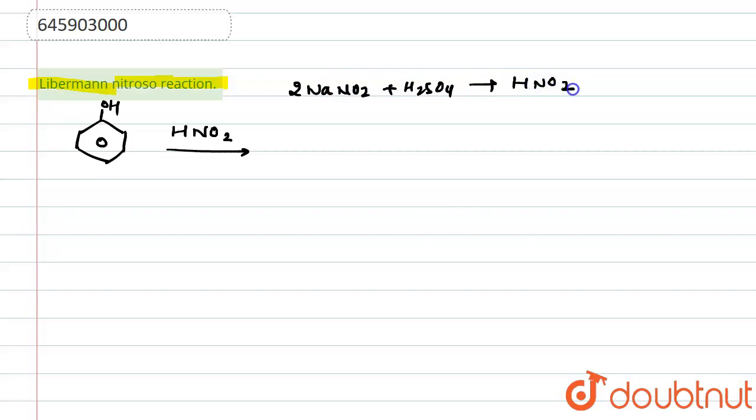This HNO2 will react with phenol. From here, the electrophile will form as NO+ because acid is already present and this will act as a base. So this reaction will take place, forming NO+ as the electrophile.